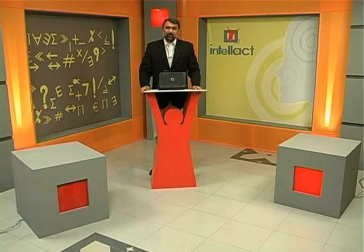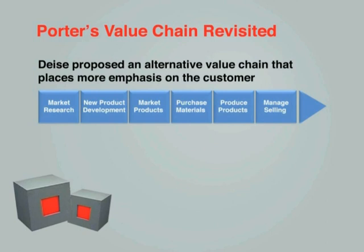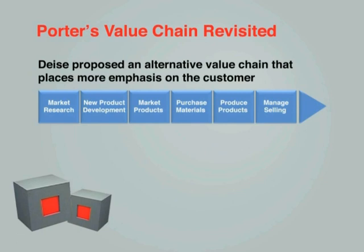Phir customers orders issue karenge, orders aane ke baad agla kaam hoga raw materials purchase karna. Please remember, copper just current - job up new market kiya, product market kiya, produce kiya, aur finally customer ko deliver kiya - yahi actual sales ka process hai. Is revised value chain mein jo major steps hain woh pehle discuss kiye gaye the - inbound logistics, production process, outbound logistics, and so on.